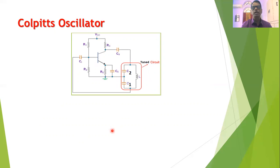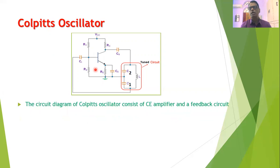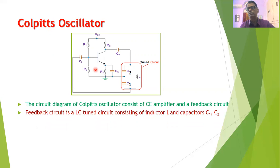The circuit diagram of the Colpitts oscillator consists of a transistor amplifier (common emitter configuration) and a feedback circuit. The output of the amplifier is coupled to a tuned feedback circuit consisting of two capacitors C1 and C2 and one inductor. The output of the feedback circuit is coupled back to the amplifier input through a coupling capacitor. Resistances R1, R2, RC, and RE are biasing resistances used to set the transistor's bias.